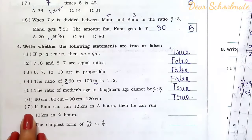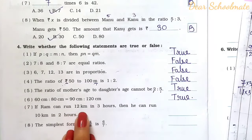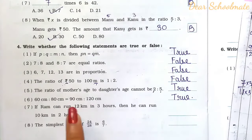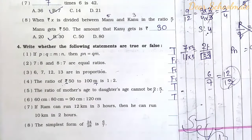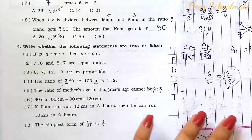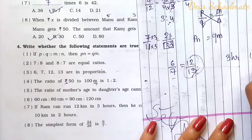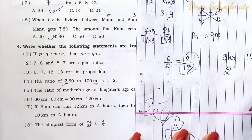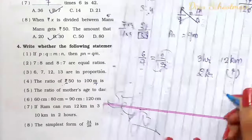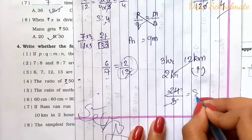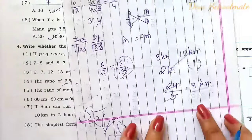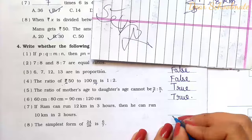Number 7: If Ram can run 12 km in 3 hours, then he can run 10 km in 2 hours. In 2 hours he can run: 2 times 12 divided by 3 equals 24 divided by 3 equals 8 km. So he runs 8 km in 2 hours, not 10 km. The statement is false.